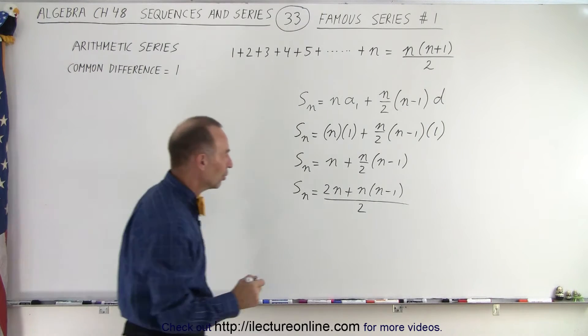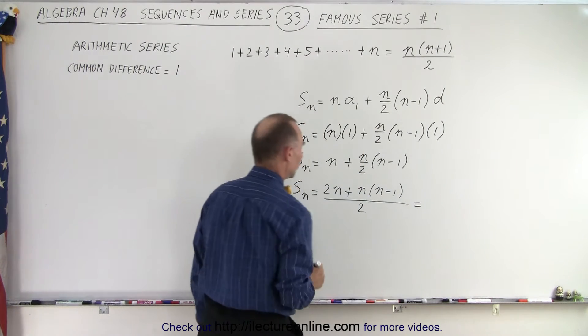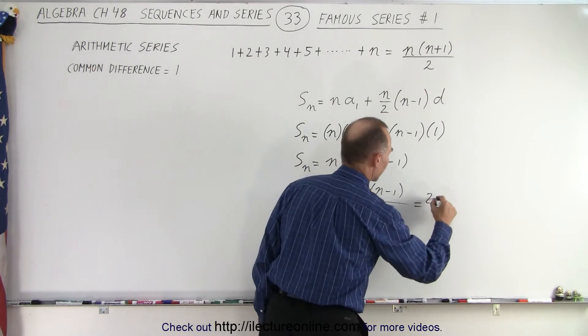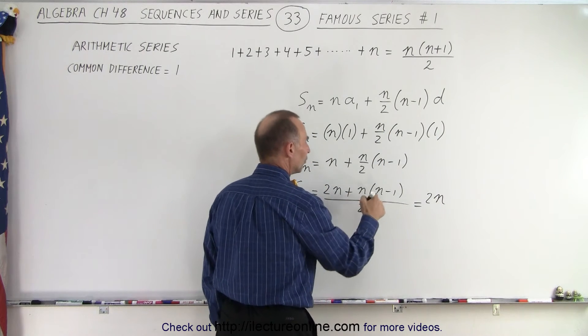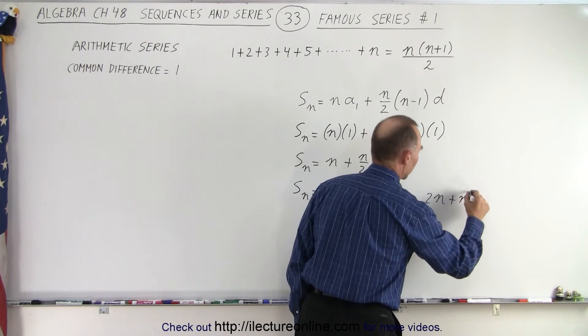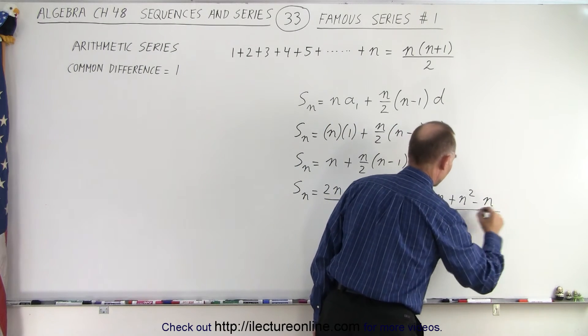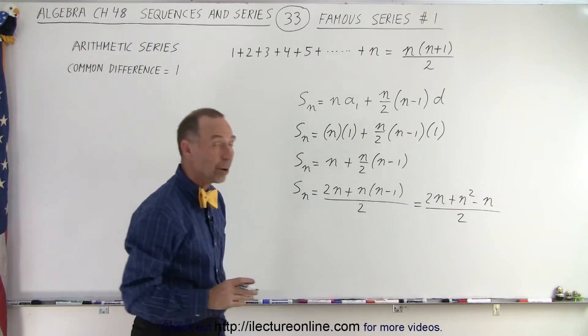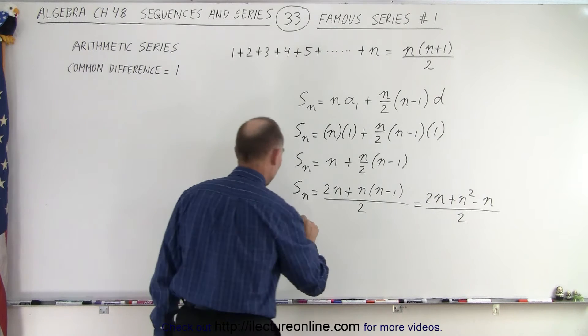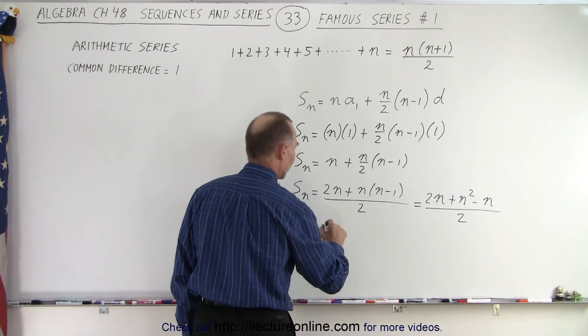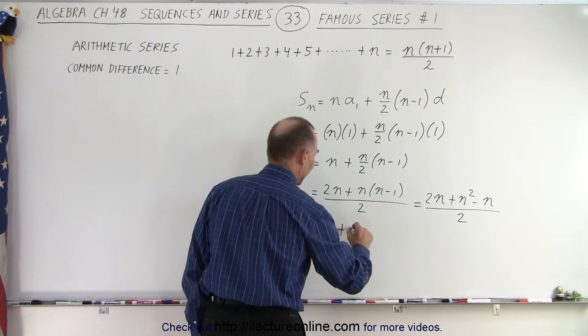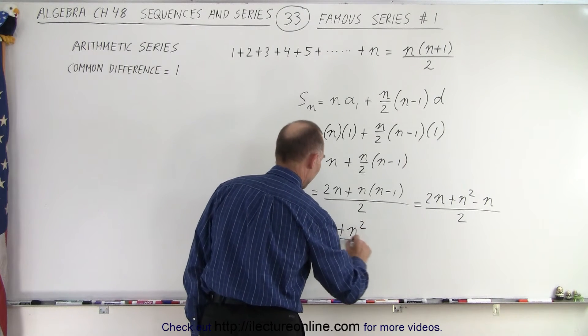Let's multiply out what we have in the numerator and see what we get. So this is equal to 2n + n² and n times negative 1 is minus n, and all that is divided by 2. So now we can subtract n from 2n and we get sₙ = (n + n²) / 2.